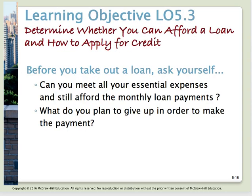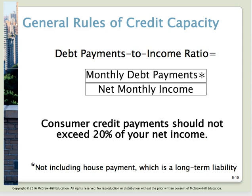Learning objective number three: determine whether you can afford a loan and how to apply for credit. The only way to determine how much credit you can assume is to first make an accurate and sensible personal or family budget. Before taking out a loan, ask yourself whether you can meet all your essential expenses already in your budget and still add a monthly loan payment. Measuring your credit capacity can be difficult, but you can follow a few rules of thumb.